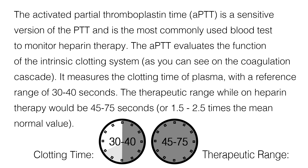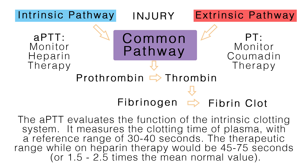The activated partial thromboplastin time, or APTT, is a sensitive version of the PTT and is the most commonly used blood test to monitor heparin therapy. The APTT evaluates the function of the intrinsic clotting system, as seen on the coagulation cascade. It measures the clotting time of plasma with a reference range of 30 to 40 seconds. The therapeutic range while on heparin therapy would be 45 to 75 seconds, or 1.5 to 2.5 times the mean normal value.